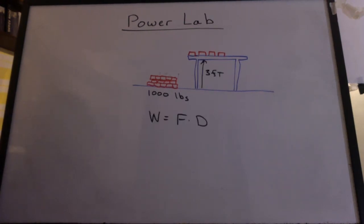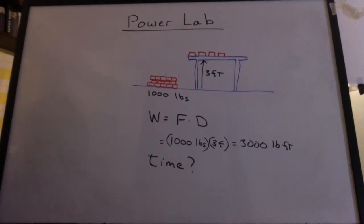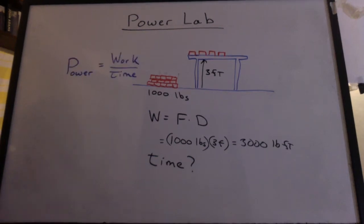Well, it is the same amount of work, 3,000 pound feet, whether I do one brick at a time or I do the whole pile. But what about the time it takes me to do this job? That's going to have an impact. And that leads us to the idea of power, work per time.